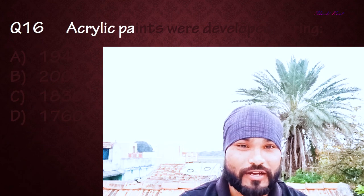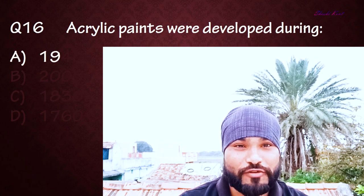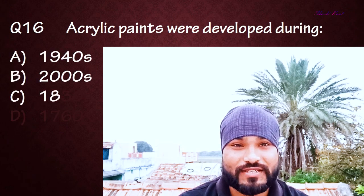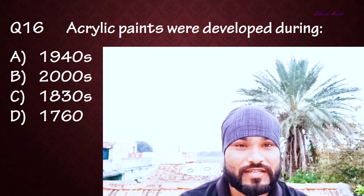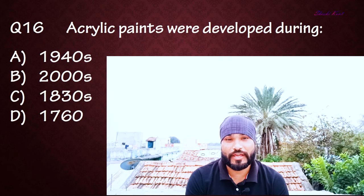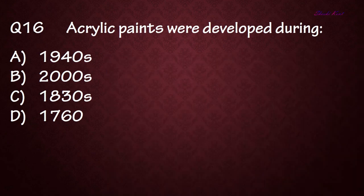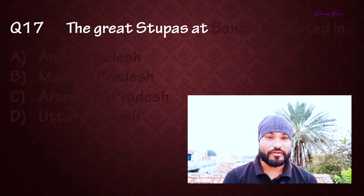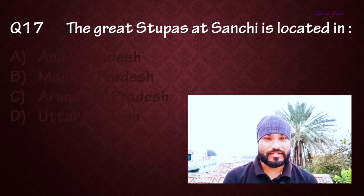Question number sixteen: Acrylic paints were developed during — Option A: 1940s, Option B: 2000s, Option C: 1830s, Option D: 1760s. The correct answer is A: 1940s.